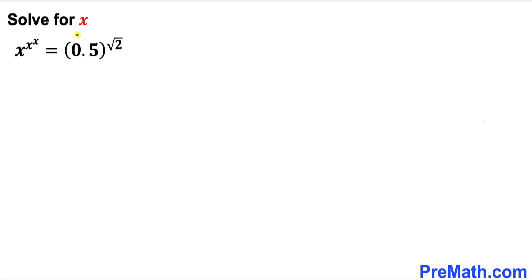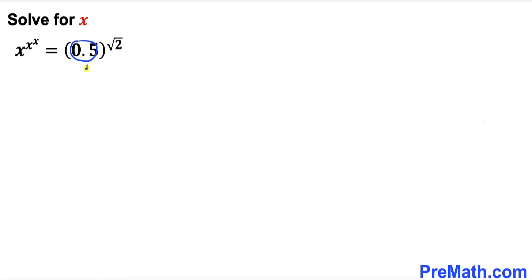Here's our very first step. Let's focus on the right-hand side of this equation and manipulate it. Let's focus on this 0.5 — it can be written as 1 divided by 2. So therefore the right-hand side can be written as (1/2) to the power square root of 2.